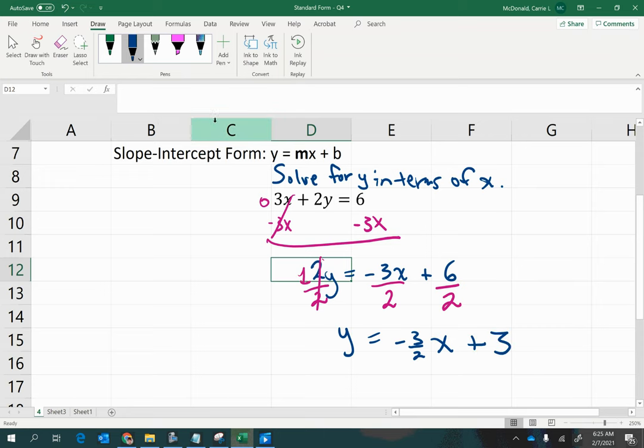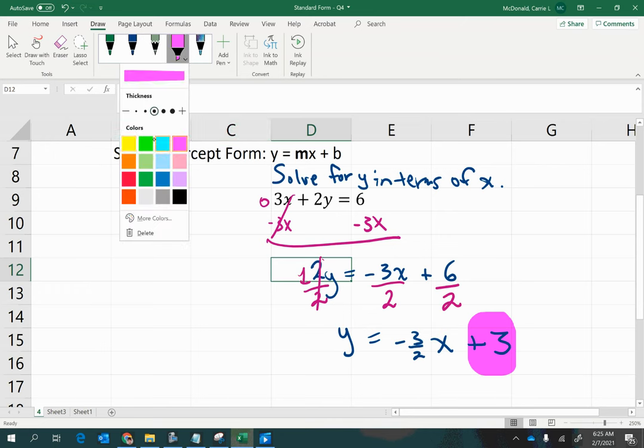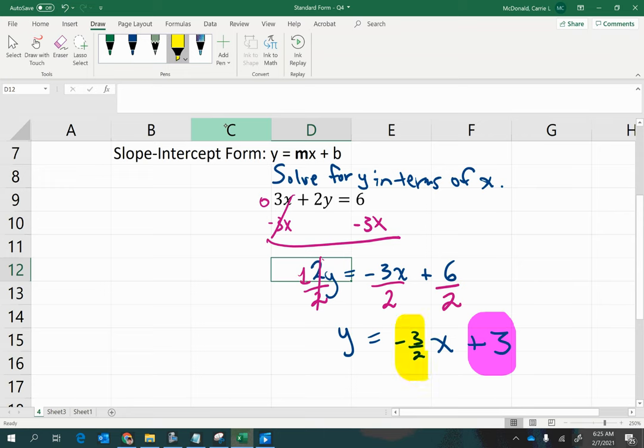Ooh, and notice there is the y-intercept that we found earlier. And here is the slope, negative 3 halves.